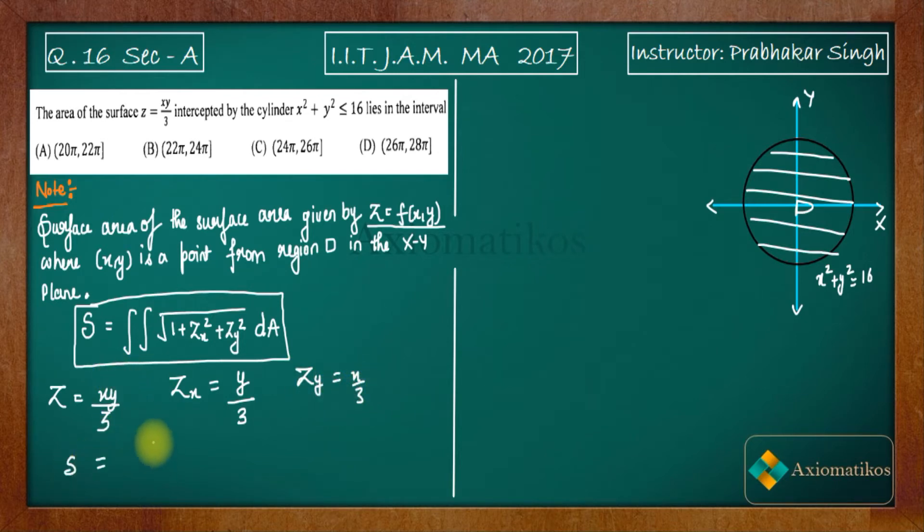S will be double integral under root 1 plus Y square plus, so you will get 1 by 3 times of 9 plus X square plus Y square. So I am not mentioning everything. Now because you are in the XY plane, so what do you know? You know that if you have this dA and you are in the XY plane then I will write something for you.